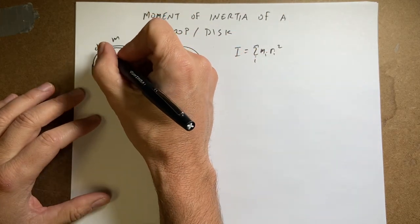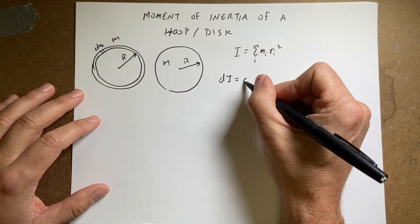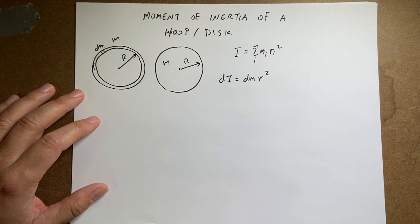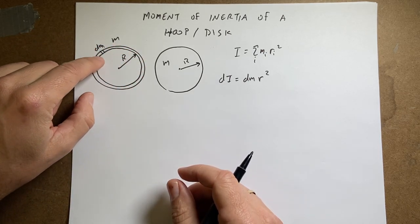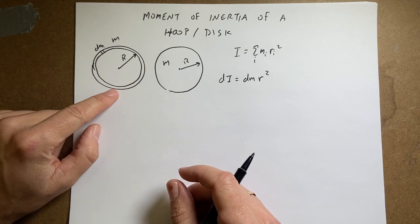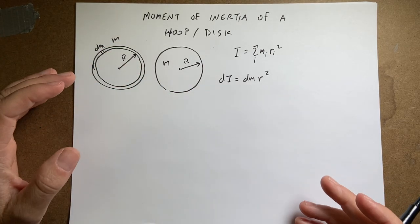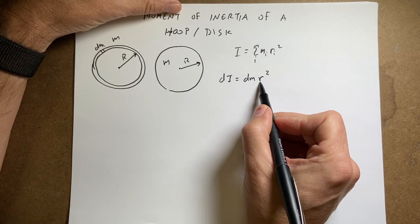So the moment of inertia due to this little piece dI is going to be dm r squared. So now I need to add up that for all these pieces going around here. And what you'll notice does not change here is r. The distance from here to there is the same no matter where I am. That's the definition of a circle. So this r is the constant r.